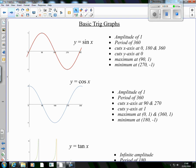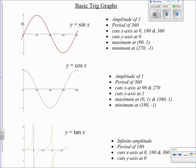If you can copy this down as your notes. That's your sin graph. It has an amplitude of 1 — that means it goes 1 high and 1 low, so you can see 1 and negative 1 in the graph. It's got a period of 360, meaning after 360 degrees it starts repeating. It cuts the x-axis at 0, 180 and 360, and it cuts the y-axis at 0 as well. The maximum value is at 90 with a value of 1, and the minimum value is at 270 with a value of negative 1.